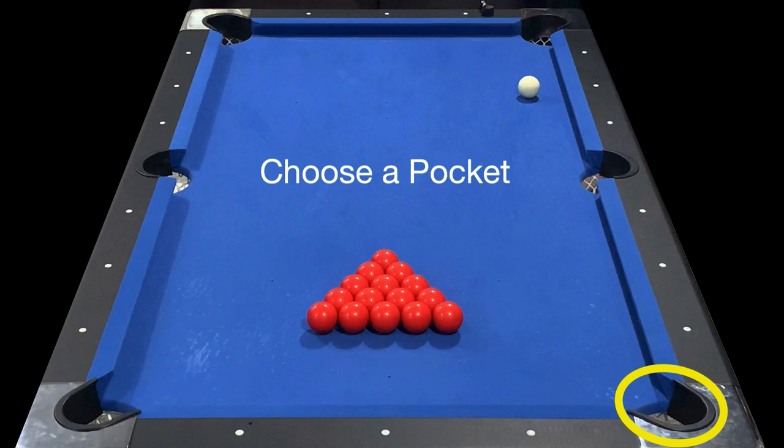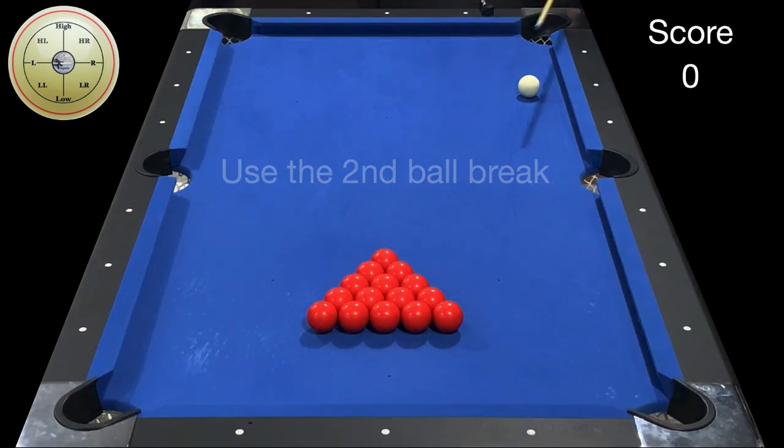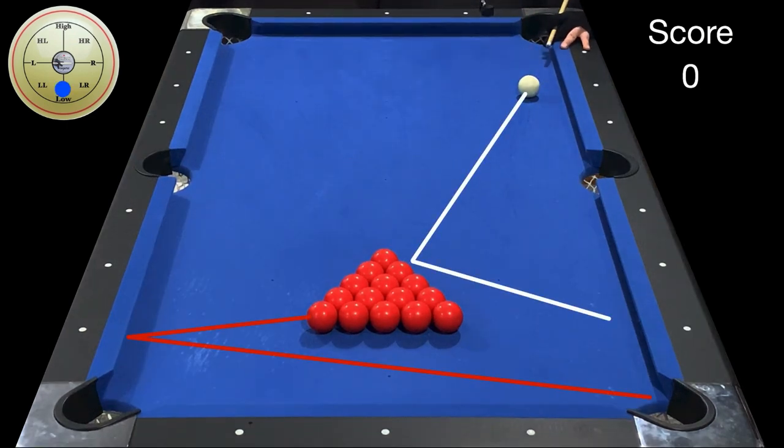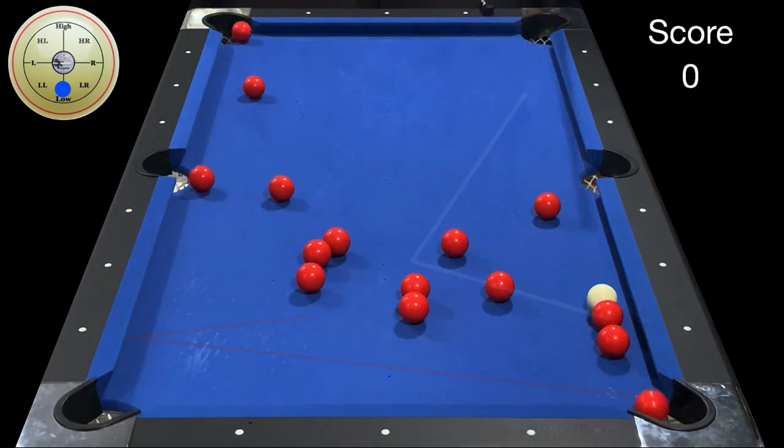The person breaking can choose either of the two pockets below. Now let's use the second ball break. The idea here is to hit the second ball with a little bit of a stun shot so that we can bank the corner ball off the rail into the right bottom corner pocket.